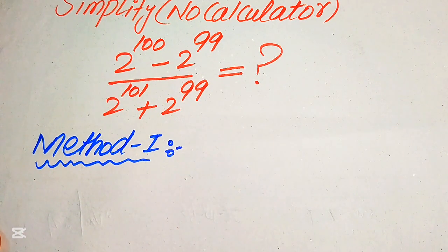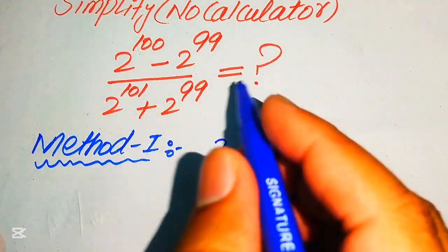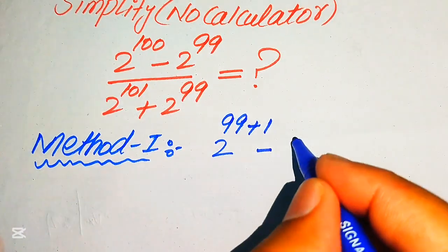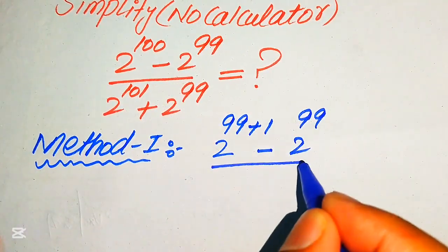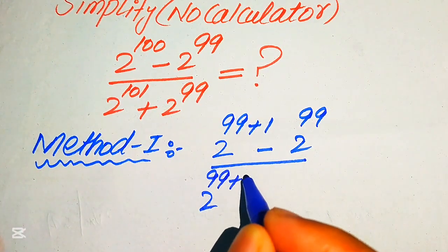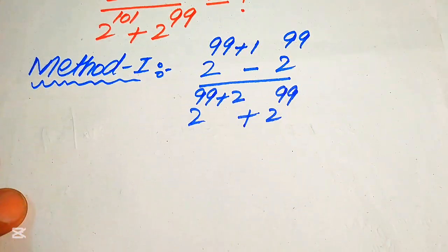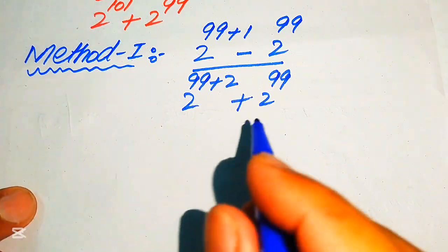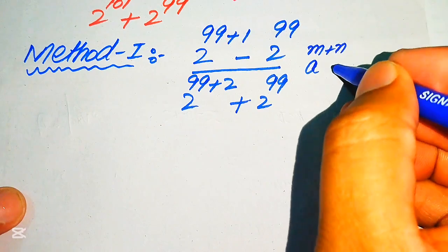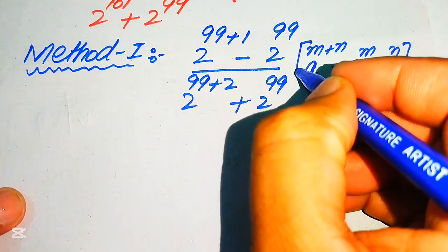In the first method, we write 2 to the power of 100 as 2 to the power of 99 plus 1, minus 2 to the power of 99, divided by 2 to the power of 99 plus 2, plus 2 to the power of 99. In the next step we use the exponent law: a to the power of m plus n equals a to the power of m multiplied by a to the power of n.